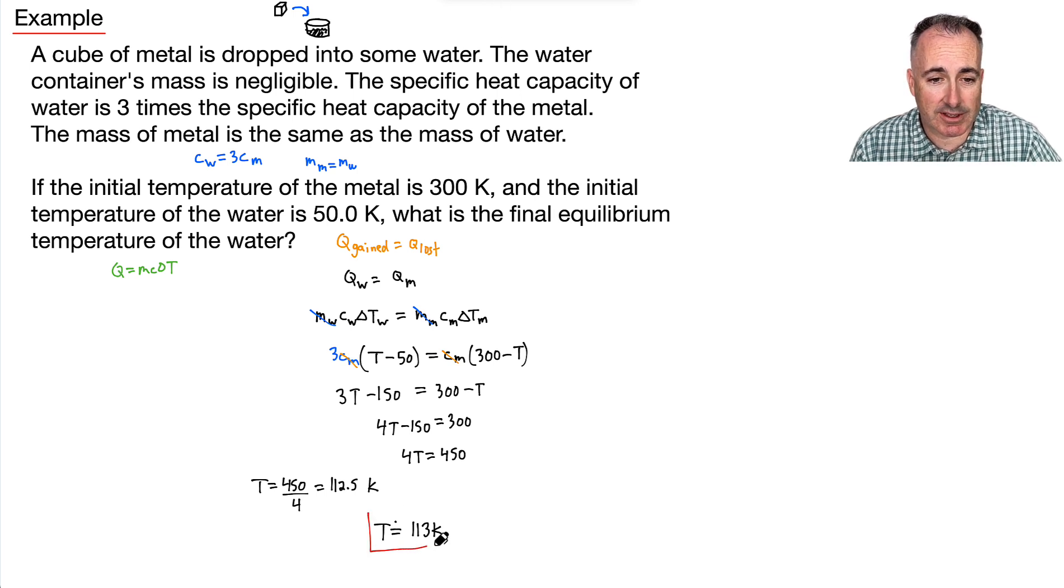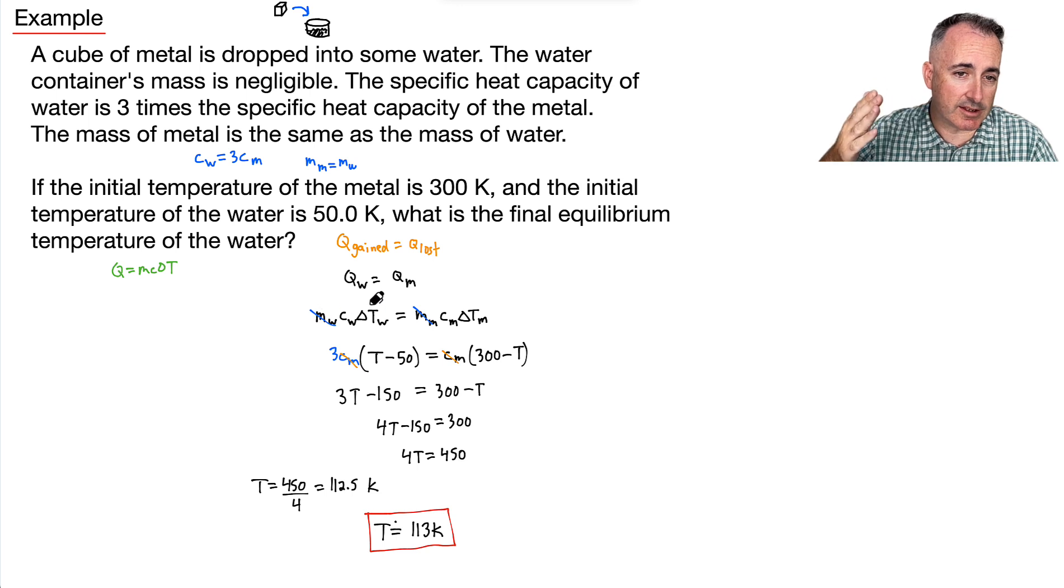So again, the key to solving this thing here was, I think, to just not panic. You just set up an equation for Q gained equals Q lost. And you just put everything on one side that gains energy, everything on the other side that loses energy, and just set them equal to, solve what you need. Just be really careful at T minus 50. And here was 300 minus T. But once you get those, hopefully this here will be a lot simpler.